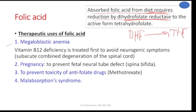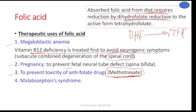Therapeutic uses of folic acid include megaloblastic anemia, pregnancy, prevention of toxicity from anti-folate reductase drugs such as methotrexate in rheumatoid arthritis and anti-cancer treatment, and malabsorption syndrome. We need folic acid to prevent any abnormality in the spinal cord — sub-acute combined degeneration of the spinal cord. During pregnancy there is an increased need for folic acid to prevent fetal neural defects such as spina bifida.